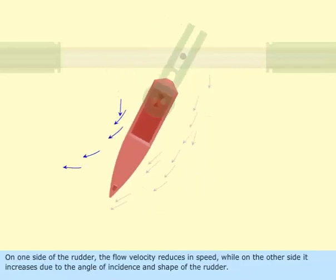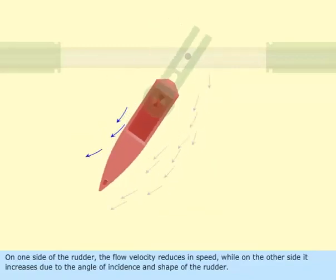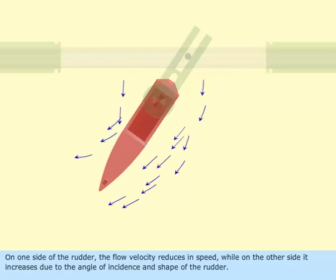On one side of the rudder, the flow velocity reduces in speed, while on the other side it increases due to the angle of incidence and the shape of the rudder.